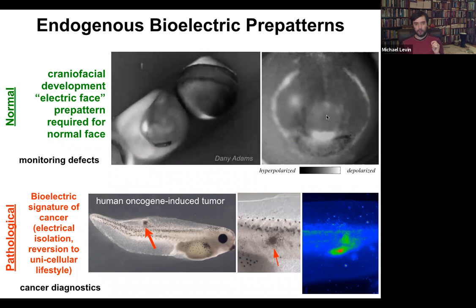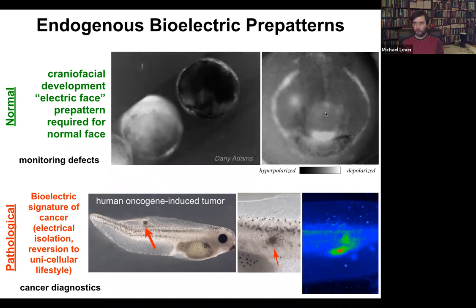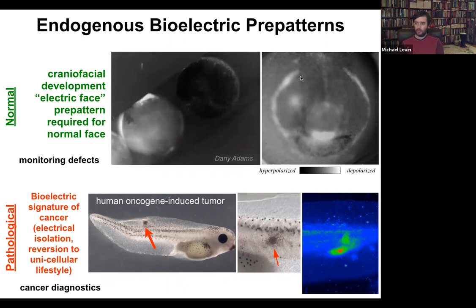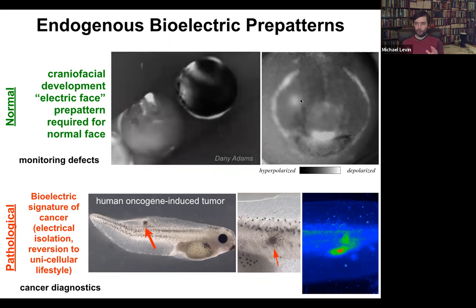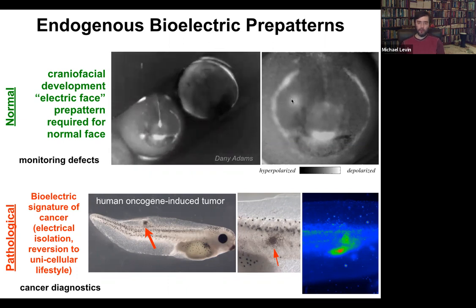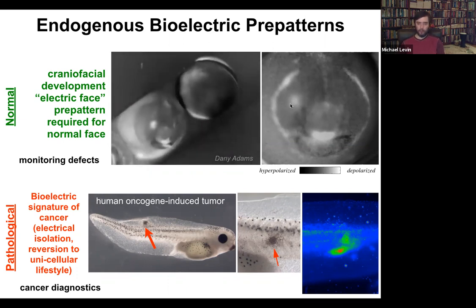The reason we know it's instructive is because if you go in with optogenetics or other tools and change this electrical pattern — not move any cells, but just change the pattern — then you can get, for example, those Picasso tadpoles. You can move organs around at will. This is a normal pattern that is necessary for correct craniofacial development.